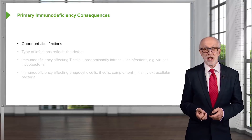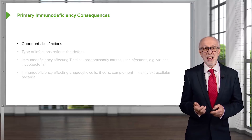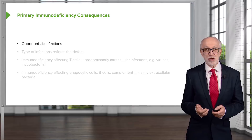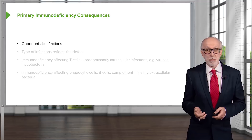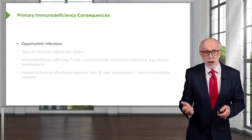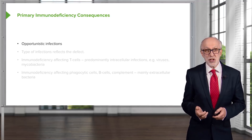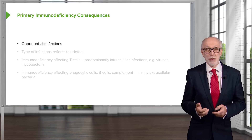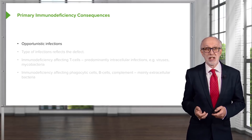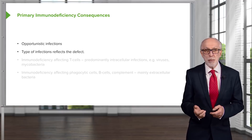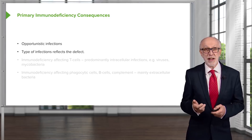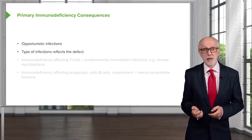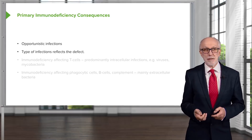The consequences of primary immunodeficiency are that we see opportunistic infections. These are infections that most of us, most of the time, are not really troubled by — we will deal with them perfectly adequately. But in patients with primary immunodeficiency, these infectious agents take the opportunity of the defective immune response to establish disease. The type of infections actually reflects the defect, so a defect in phagocytic cells will result in a different spectrum of infections to, for example, a defect in B lymphocytes.